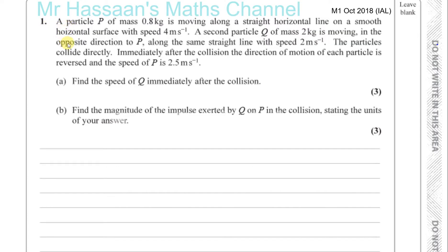Particle P of mass 0.8 kilograms is moving along a straight horizontal line on a smooth horizontal surface with speed 4 meters per second. A second particle Q of mass 2 kilograms is moving in the opposite direction to P along the same straight line with a speed of 2 meters per second. The particles collide directly. Immediately after the collision, the direction of motion of each particle is reversed and the speed of P is 2.5 meters per second. Find the speed of Q immediately after the collision.